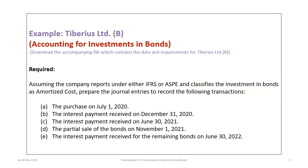The requirement for this tutorial: assuming the company reports under IFRS or ASPE and classifies investments in bonds as amortized cost, or AC, we need to prepare journal entries for the purchase of the bonds on July 1st, the interest payment received on December 31st, the interest payment on June 30th, the partial sale of bonds on November 1st 2021, and then the interest payment for the remaining bonds on June 30th 2022.